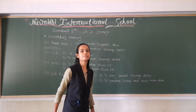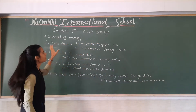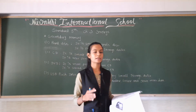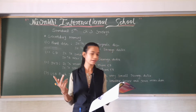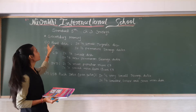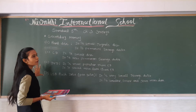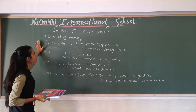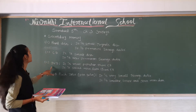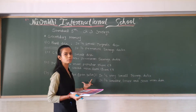Good morning everyone. Today we are discussing chapter number 3, Storage. In the last lecture we learnt about primary memory, which has two types: ROM and RAM. In this lecture we will discuss in detail about secondary memory, which has four storage types: first, hard disk; second, CD; third, DVD; and fourth, USB flash drive, which we call pen drive.